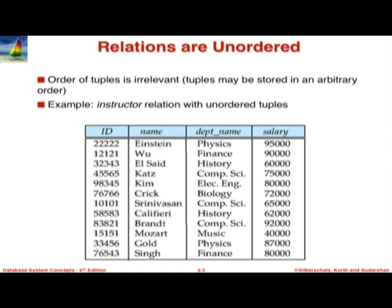What does this mean? When you write a query saying 'show me all instructor tuples,' it might be that the tuples are shown in increasing order of ID, but there is no guarantee. If you do want them shown in increasing order, then in the query language you have to explicitly say 'show me the contents of the instructor relation sorted on ID in increasing order.' Sort order is not part of the logical relational model — it is a physical property.